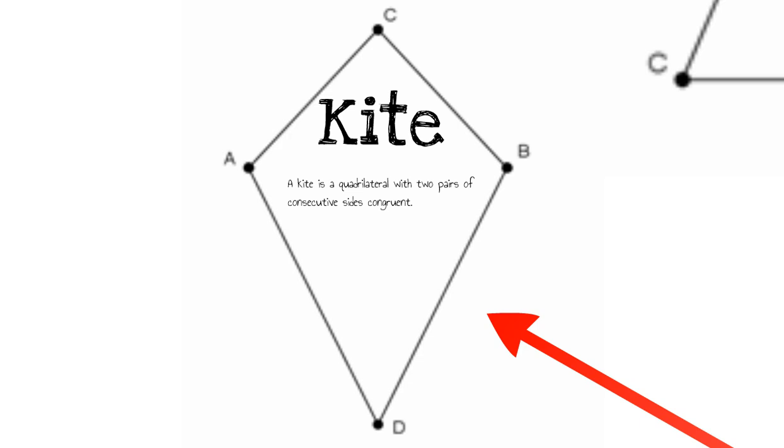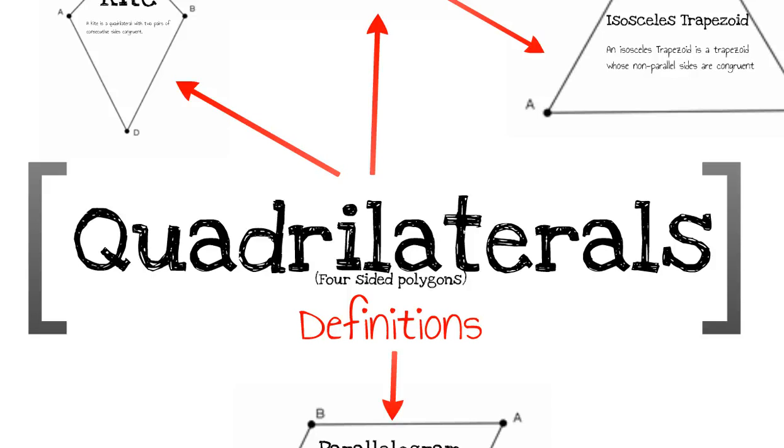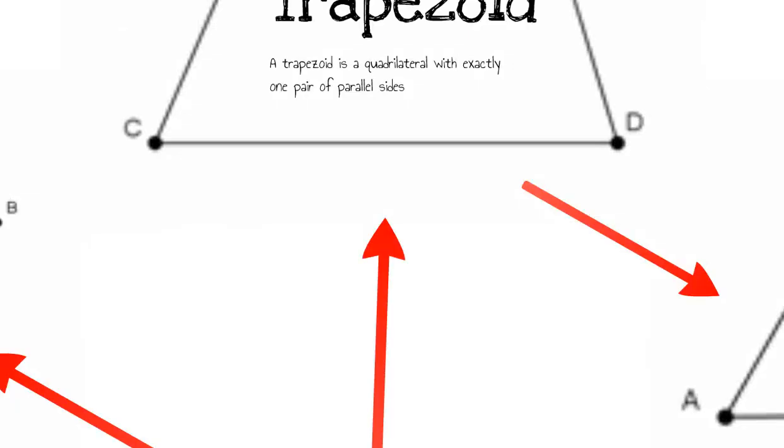For now, that's all we're going to talk about with kites. It's a very simple definition. So we're going to go back and look at another type of quadrilateral, and that type is a trapezoid.